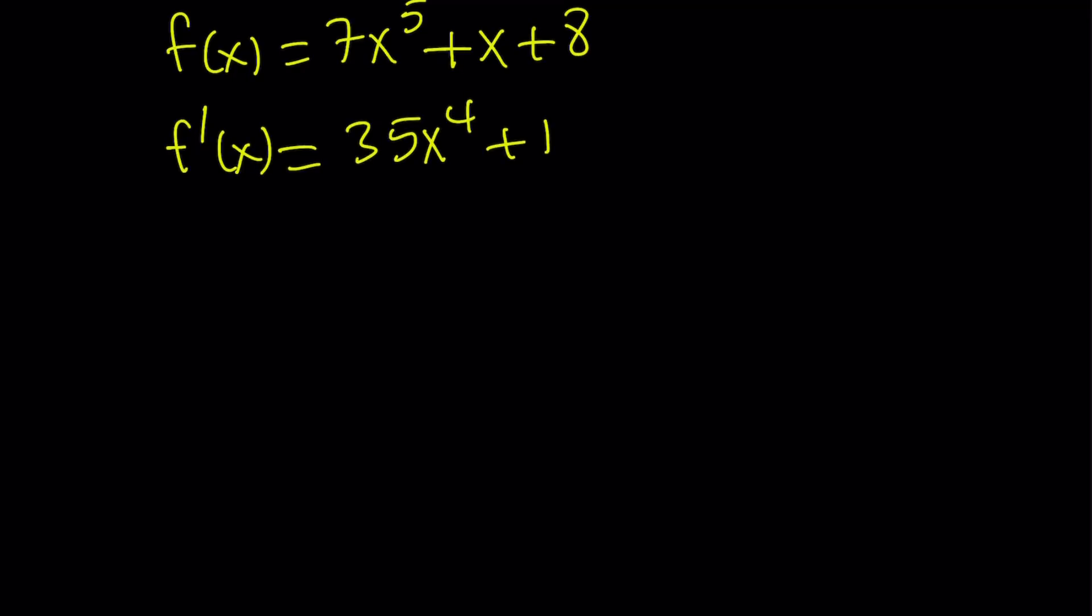Now if I'm trying to find the critical points, I will set the derivative equal to 0. And if I solve for x, I'll get x to the 4th equals negative 1 over 35. But unfortunately, no real number raised to the 4th power is going to give us a negative answer. So this equation has no real solutions.